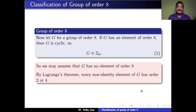Let us start with a group with 8 elements. By Lagrange's theorem, the order of an element divides the order of the group. So the possible orders of the elements of G are 1, 2, 4, and 8. But we know that the identity element is the only element of order 1, so all non-identity elements of G have order either 2, 4, or 8.